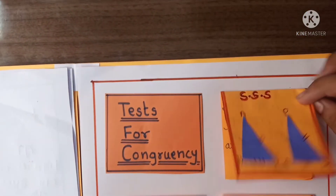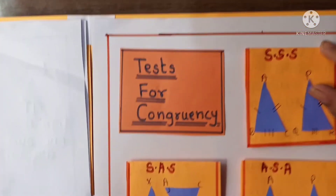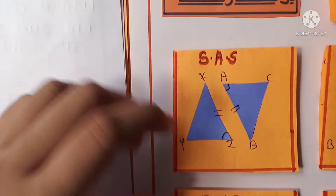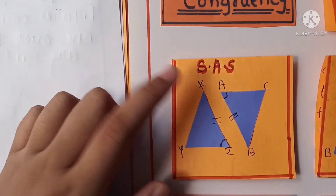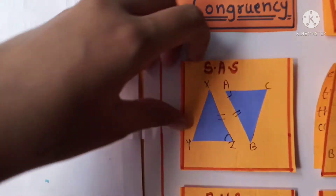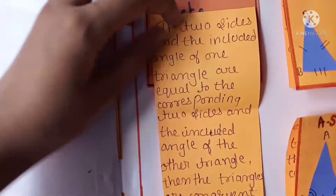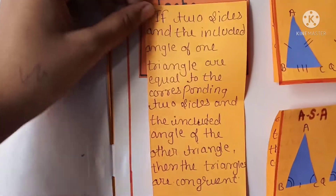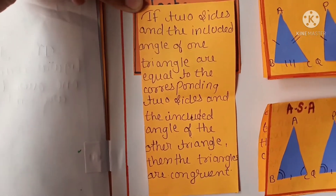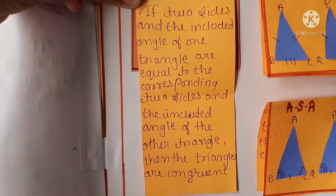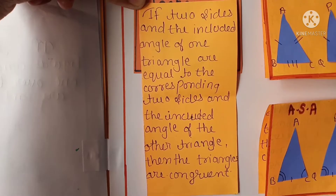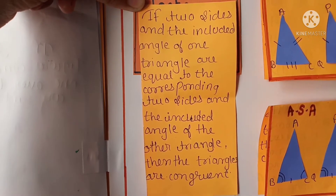Here is the Side-Angle-Side test. Here is the figure. If two sides and the included angle of one triangle are equal to the corresponding two sides and included angle of the other triangle, then the triangles are congruent.